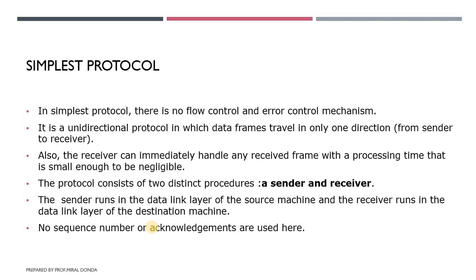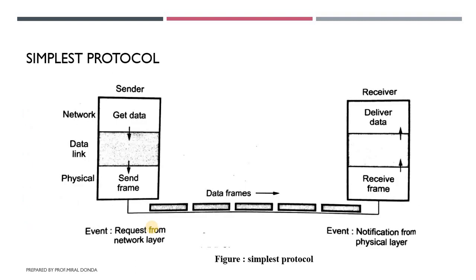We can assume that data packets received at the receiver side may not be in order. This figure shows the flow of the Simplest Protocol. There is no need for flow control in this scheme. The data link layer at the sender side gets data from its network layer, makes a frame out of the data, and sends it. The data link layer at the receiver side receives a frame from its physical layer, extracts the data, and delivers it to its network layer.